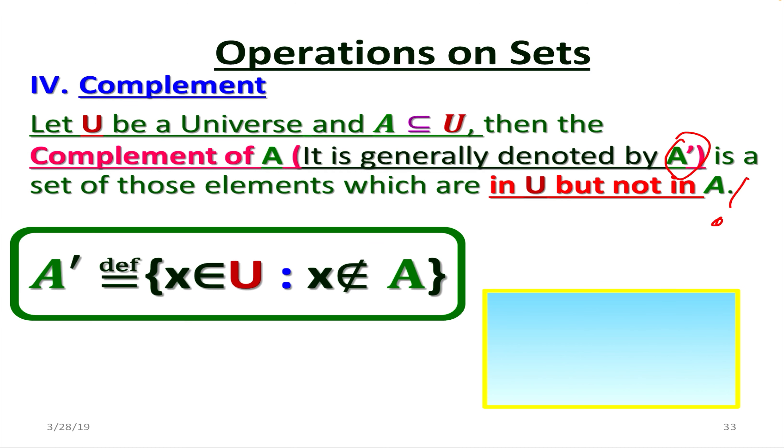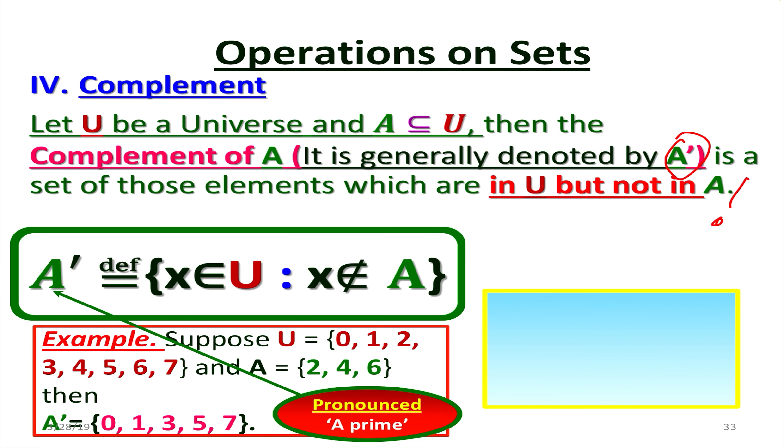So A apostrophe equals by definition all x from U but x are not from A. For instance, suppose U to be 0, 1, 2 all the way up to 7, and A is a subset 2, 4, 6. So then the complement of A is going to be the set consisting of the following elements: 0, 1, 3, 5, 7.